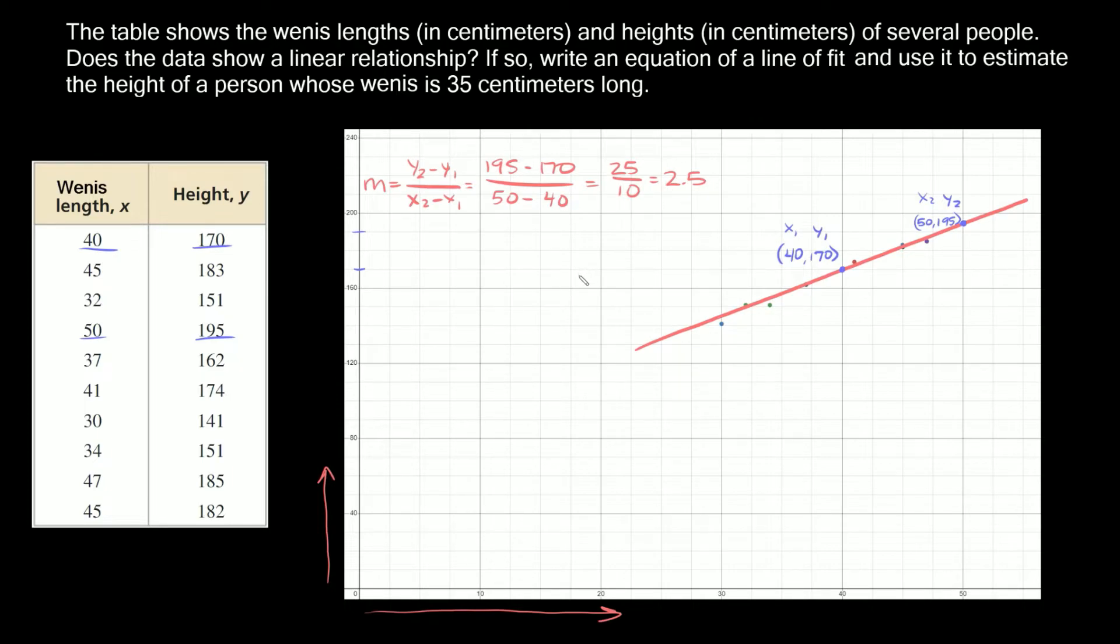That was the first part: picking two points and finding the slope. Now the second part is writing the equation. To do that we need to use point-slope form: y minus y1 equals m times x minus x1 in parentheses. We're going to fill in our y1, our slope, and our x1. This is going to be y minus 170 equals 2.5 times x minus 40.